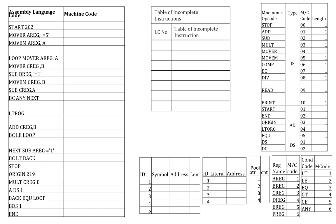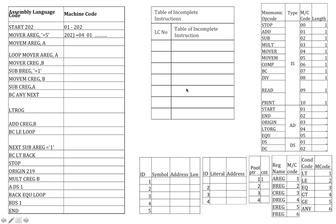Example on the single pass assembler: the assembly language program given as input results in the machine code, and for generating the machine code it makes use of symbol table, literal table, and the table of incomplete instructions. The first instruction START 002 will set the location counter to 002.